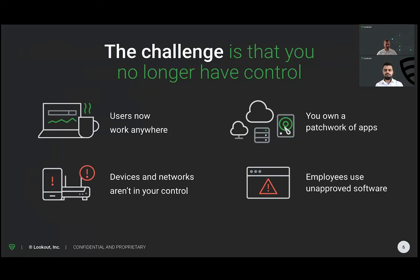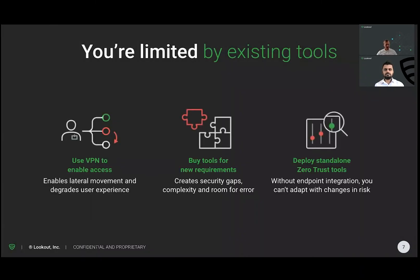That's what's called shadow IT. If your approved cloud service is O365, employees might also use Box or Dropbox to share and collaborate with data. You're definitely limited with existing tools. VPNs, for example, are a dinosaur technology — they're designed to grant access to a perimeter, to the 'castle' that's protected. That was the purpose of introducing VPN technology.